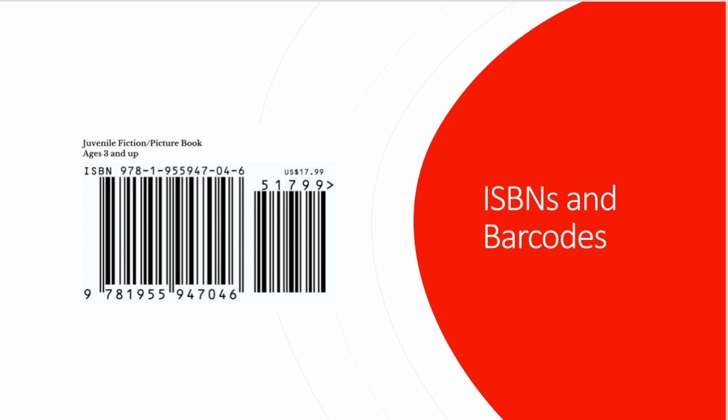ISBNs and barcodes — I print for hundreds of indie authors, and a lot of times I get a file without a barcode. You can't sell at retail without a barcode. Make sure when you produce your files the first time, produce them with a barcode. There are places online where you can get barcodes for free — just search for free barcodes online, manufacture it, and put it on your cover.